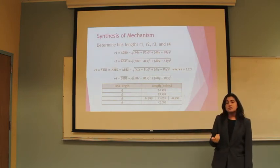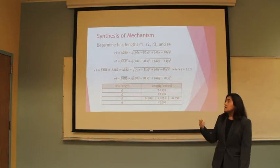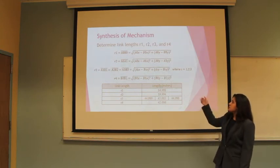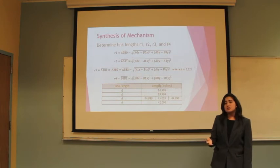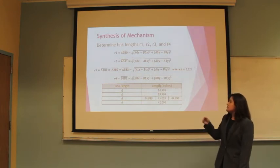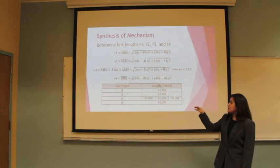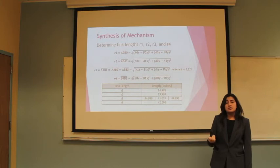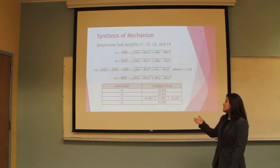Next for the synthesis of the mechanism, we needed to find the lengths of r1, r2, r3 and r4 to make sure that we have a four bar mechanism. To find that we used these equations and plugged in all the coordinates given to us by the positions. We found that r1 and r2 were 14.98 and 19.99 respectively. For r3 we had to do it three times because we were given three different positions to make sure that all three of the position coordinates had the same length, and we found that they did—they all averaged to 44.99 and our r4 is 42.